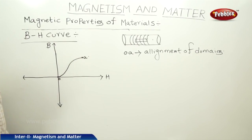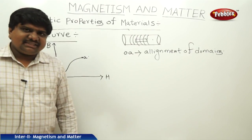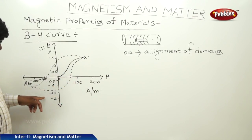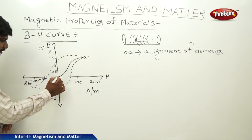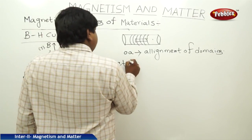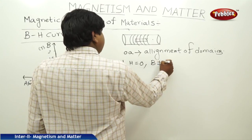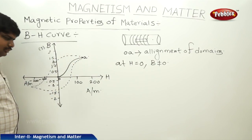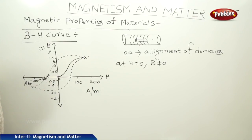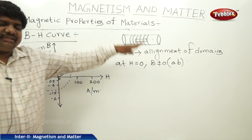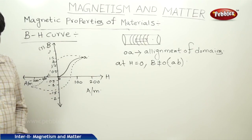Now try to reduce the H value. While you are reducing H, it will reach a particular value. As the H value decreases until it reaches the initial state, at H equals zero, the B value is not zero — B still exists. So at H equal to zero, B is not equal to zero. We can observe this with the curve from A to B and C. This remaining field that still exists in the magnetic substance is called the remnant or retentive magnetic field.